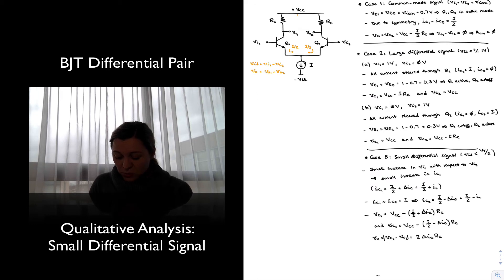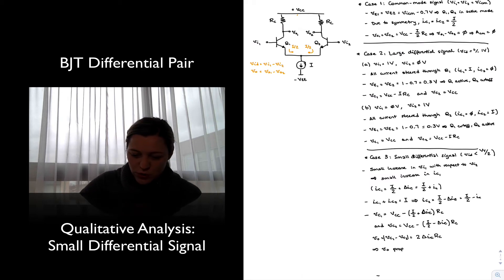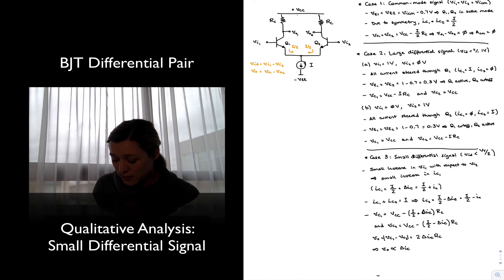And again, this is important because we can see the output voltage is proportional to that delta I_C. So V_out is proportional to delta I_C, and the delta I_C in itself is proportional to the small differential signal V_id. Therefore, the circuit can be used as an amplifier.